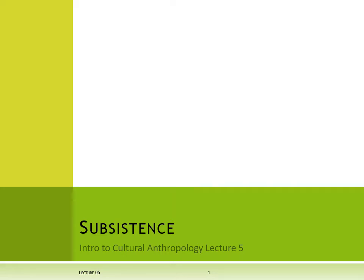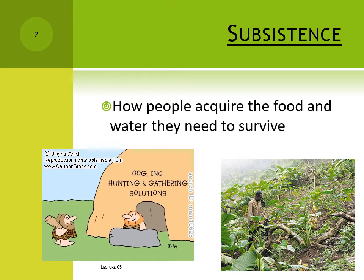In the first unit we talked about anthropology as a science and how anthropology is done. In unit two we're going to shift gears and get into the heart of the course and start talking about what anthropologists have learned about human culture. One of the most basic features of human culture is subsistence – how people acquire the food and water they need to survive.